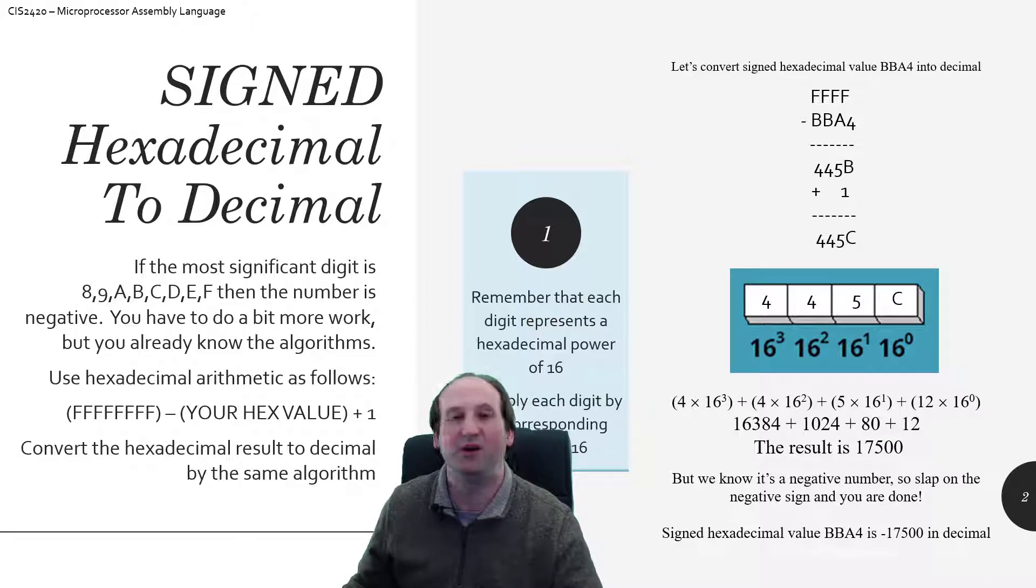So there we go there. So we have to do something. I'm doing, again, the hexadecimal subtraction method. You could do the convert to binary, do the 2's complement, and convert back to hex method if you so choose, but I really do feel like this is an easier method doing the hex subtraction here.